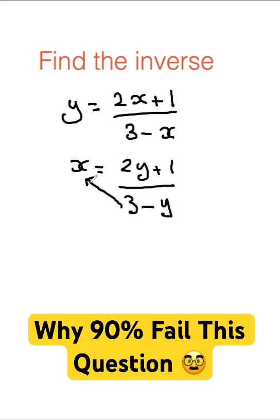Let's cross multiply the 3 minus y to the x, so you'll have x times 3 minus y will equal 2y plus 1.